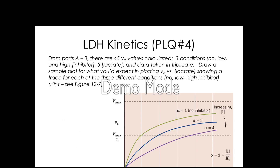The next question says from parts A and B, there are 45 V-naught values calculated. We're going to have three different conditions: no inhibitor, low inhibitor, and high inhibitor — one for each team. Each team is going to have five concentrations of lactate and take their data in triplicate, giving 15 reactions per team. Our entire three-team group is going to end up with 45 V-naught values total.